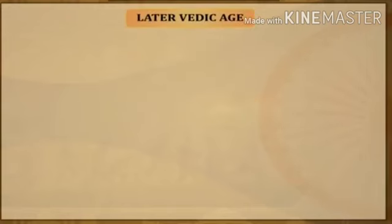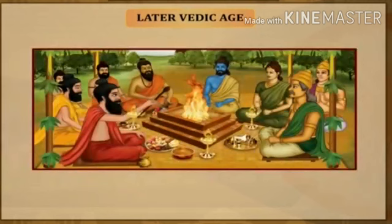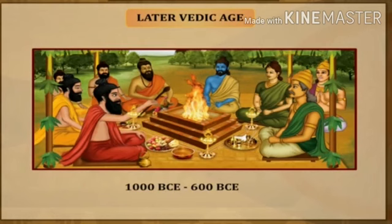The Later Vedic Age, also called the post-Rig Veda Period, refers to the period extending roughly from 1000 BC to 600 BC. After the Rig Veda, Sama Veda, Yajur Veda and Atharva Veda appeared as continuation and contributory to it.